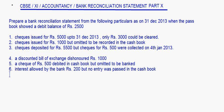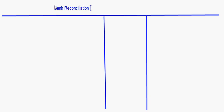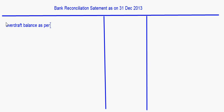Now these items have to be put in the Bank Reconciliation Statement. Let's make the Bank Reconciliation Statement first — as on 31 December 2013. Here we start with the overdraft balance as per passbook: Rs. 2500. I'll write the Add items and Less items columns.